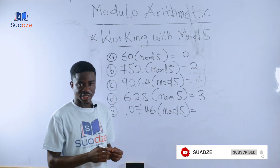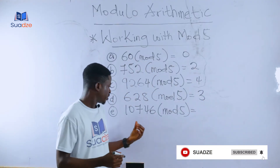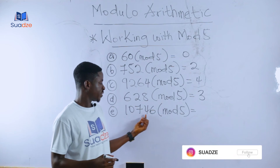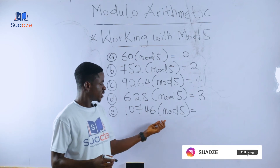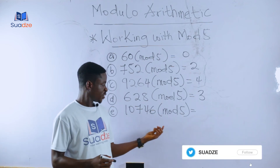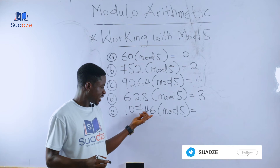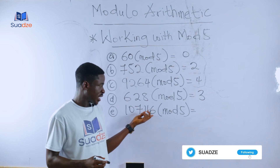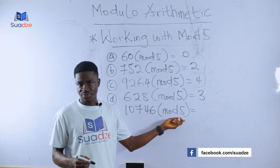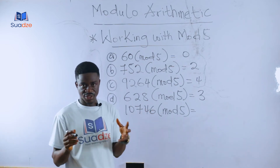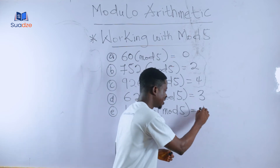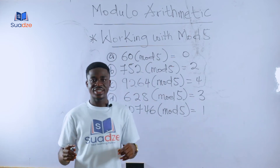The last example is 10746 modulo 5. We pay attention to the last digit, which is six. Since six is between five and nine, we subtract five: six minus five gives us one.